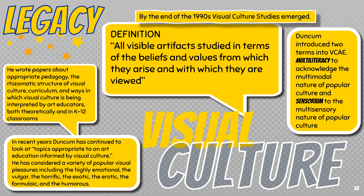By the end of the 1990s, visual culture studies emerged. Duncan began to define the term specifically for art education as "all visible artifacts, studied in terms of the beliefs and values from which they arise, and with which they are viewed." In addition, he wrote papers about appropriate pedagogy, the thematic structure of visual culture curriculum, and ways in which it is being interpreted by art educators, both theoretically and in K-12 classrooms. Duncan introduced two terms into visual culture and art education: multiliteracy, to acknowledge the multimodal nature of popular culture, and sensorium, to acknowledge the multisensory nature of popular culture.